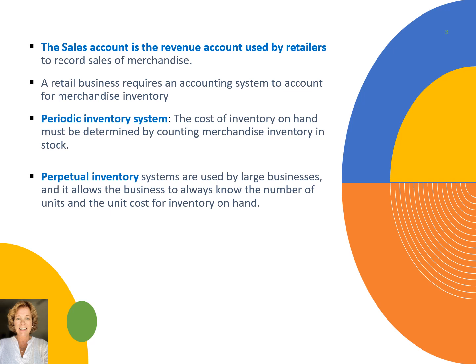It is called the perpetual inventory system because the system perpetually tracks what it has purchased, what has been sold, and what is in stock. There is still a count, but typically only what is called a cycle count, meaning you are just double-checking the accuracy of your system and checking for loss and fraud.